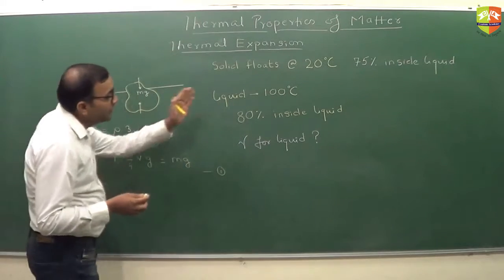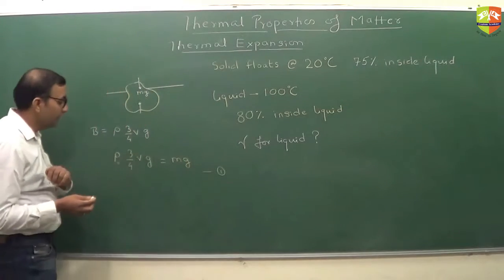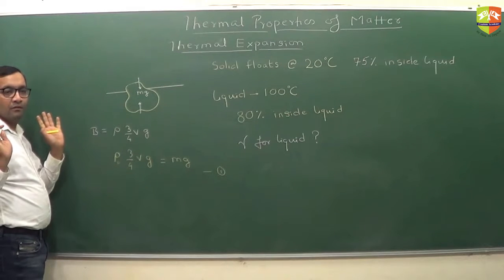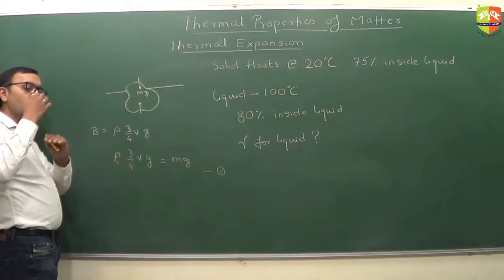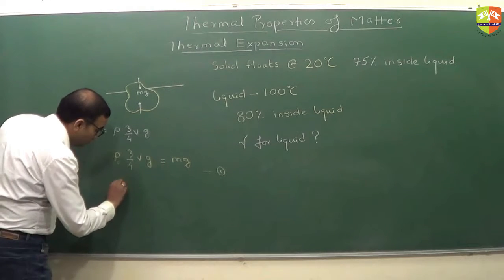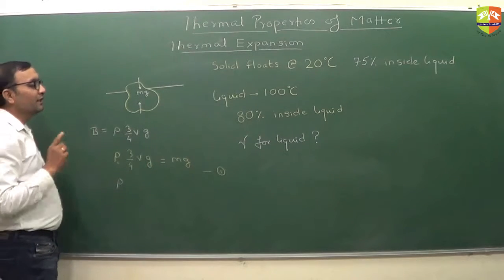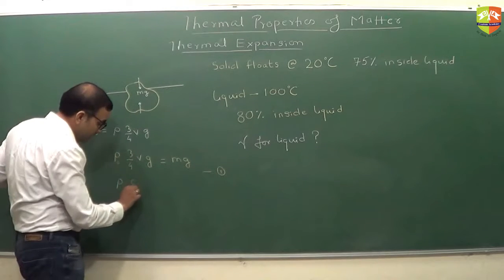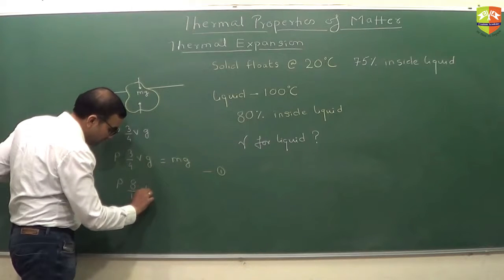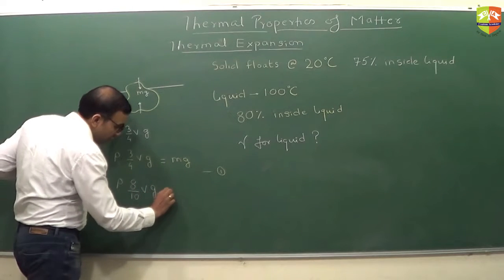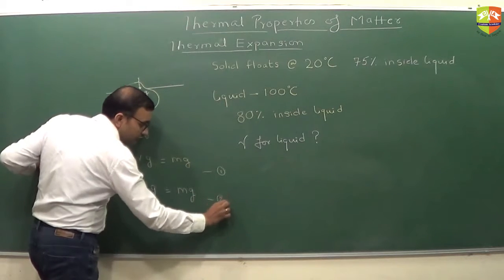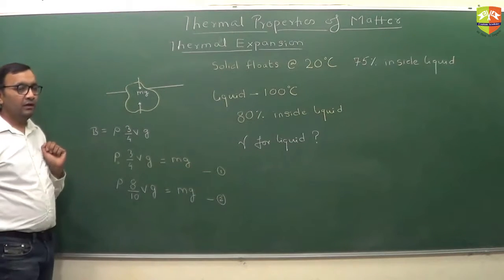After you heat it, density of liquid will change. Let's say new density is rho. So rho into, now 80% is inside the liquid, so 80 by 100, that is 8 by 10 times V into g, this should be equal to mg.